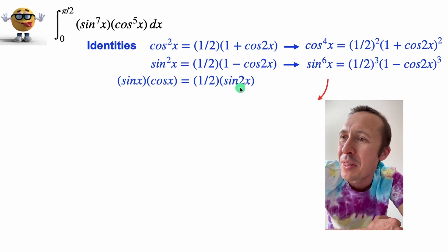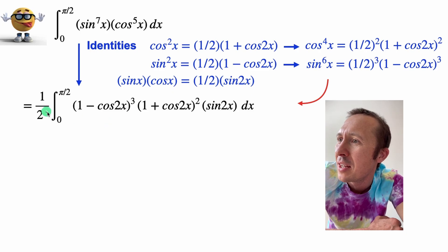So I used this identity here, which is sin x cos x equals one half sin 2x. And if we substitute that in, what I got was this right here.